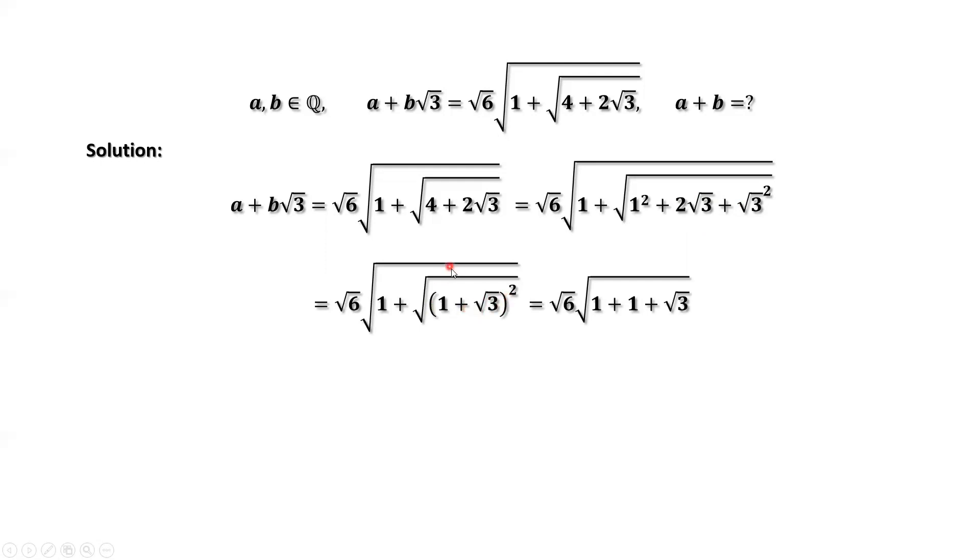We have square root here and square here. Both can be cancelled. So the inside part is 1 plus 1 plus √3, which is 2 plus √3.